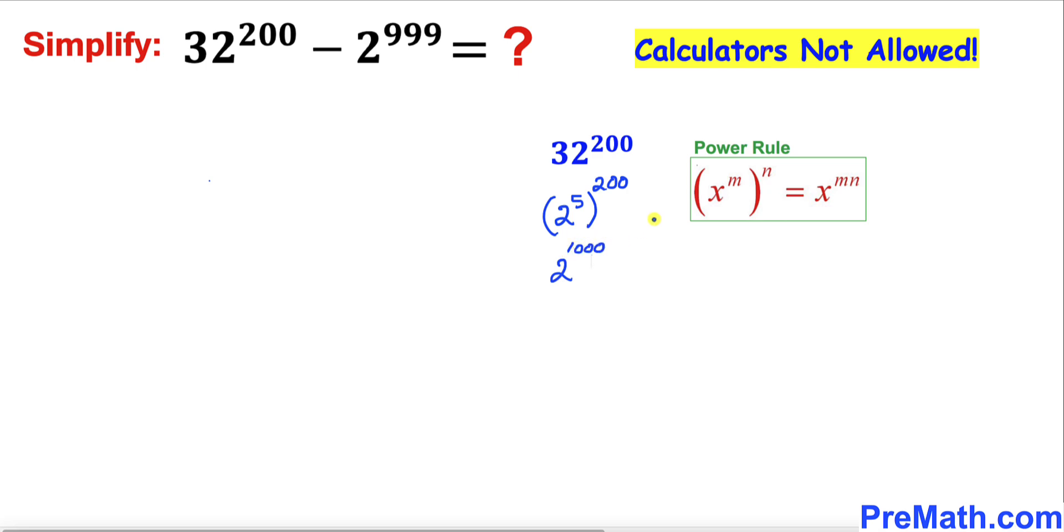Therefore I'm going to replace this part by 2 to the power 1000. So therefore I can write this one as 2 to the power 1000, and then I'm going to leave this one as it is: 2 to the power 999.